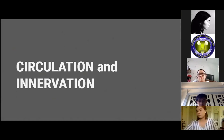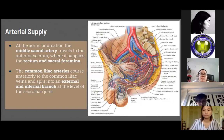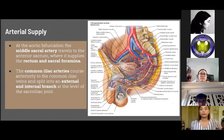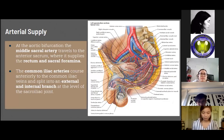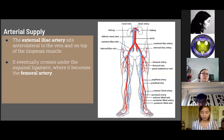For the circulation and innervation of the male pelvis: at the aortic bifurcation, the middle sacral artery travels to the anterior sacrum, supplying the rectum and sacral foramina. It may be encountered during dissection of the presacral space. The common iliac arteries course anteriorly to the common iliac veins and split into external and internal branches at the level of the sacroiliac joint. The external iliac artery sits anterolateral to the vein and on top of the iliopsoas muscle, eventually crossing under the inguinal ligament to become the femoral artery.